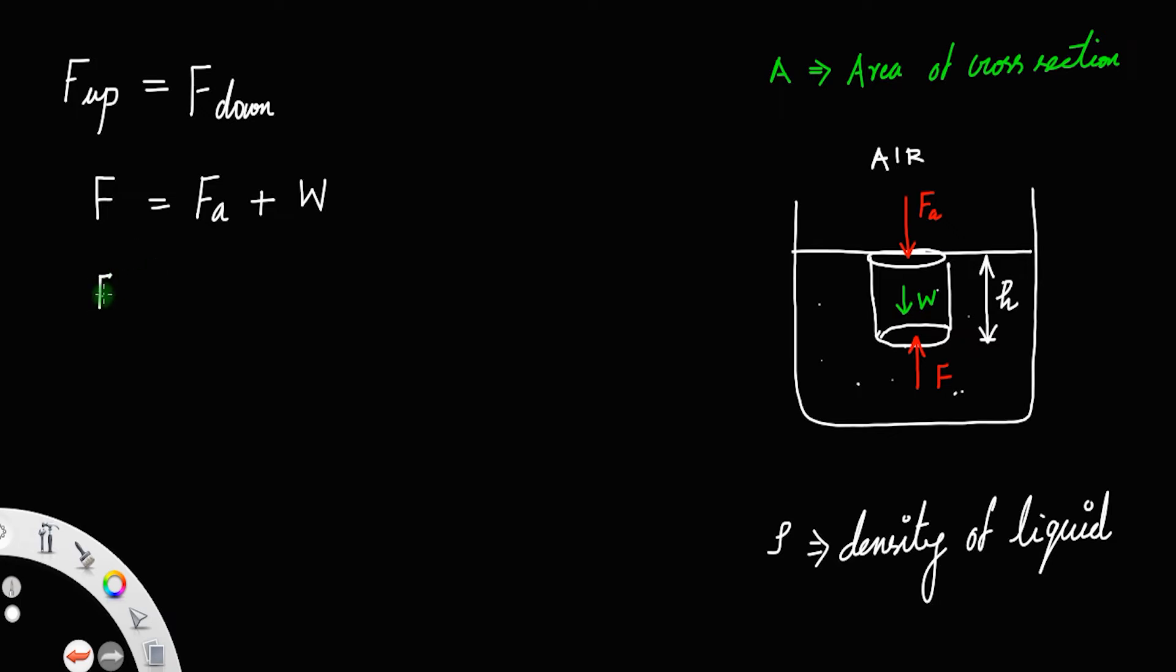So F equals F_a plus the weight. Weight equals mass times gravity. Therefore, F equals F_a plus, but mass equals volume times density, so mass equals volume times density times gravity.